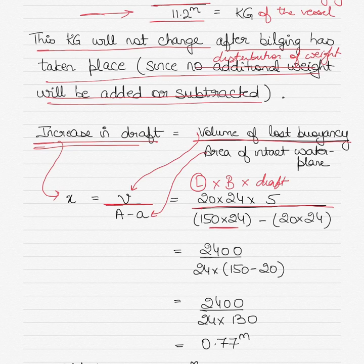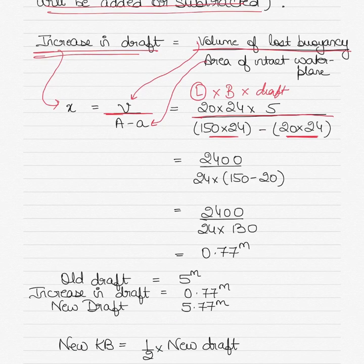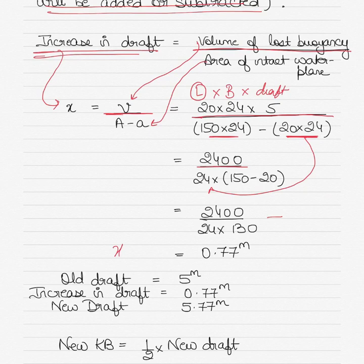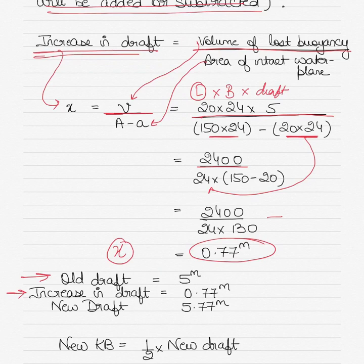The area of the intact water plane is 150 by 24 minus the bilged compartment area of 20 by 24. Since 24 is common, the denominator simplifies to 24 times (150 minus 20). The increase in draft x equals 0.77 meters. So if the old draft was 5 meters and the increase due to bilging is 0.77 meters, the new draft will be 5.77 meters.